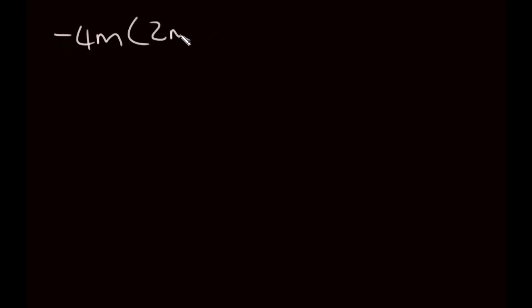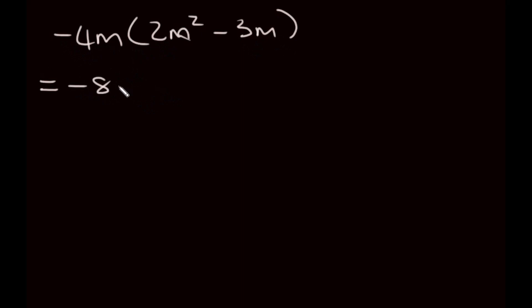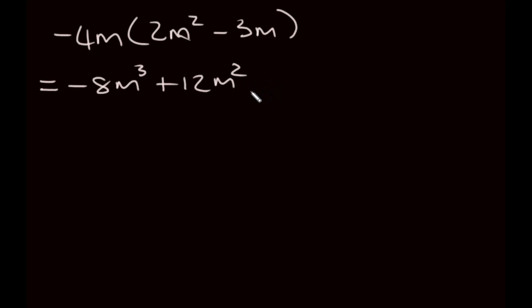Moving back to multiplication. We're given negative 4m, times the bracket 2m squared minus 3m. The outside term times the first term: negative 4 times positive 2 is negative 8, and adding the exponents on m gives 2 plus 1 equals 3, so negative 8m cubed. Then negative 4 times negative 3: negative times negative is positive, giving positive 12, and 1 plus 1 on the exponents gives 2. So our answer is negative 8m cubed plus 12m squared.